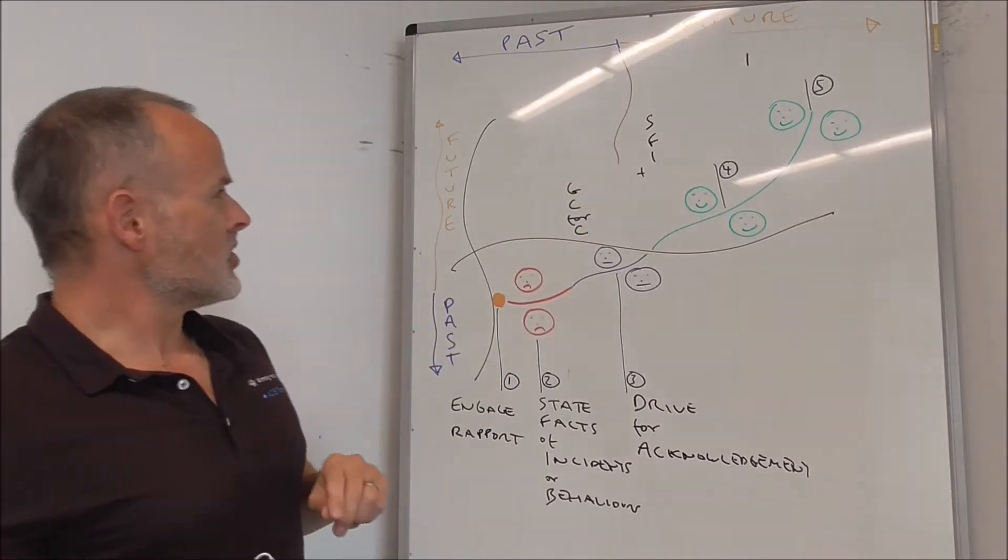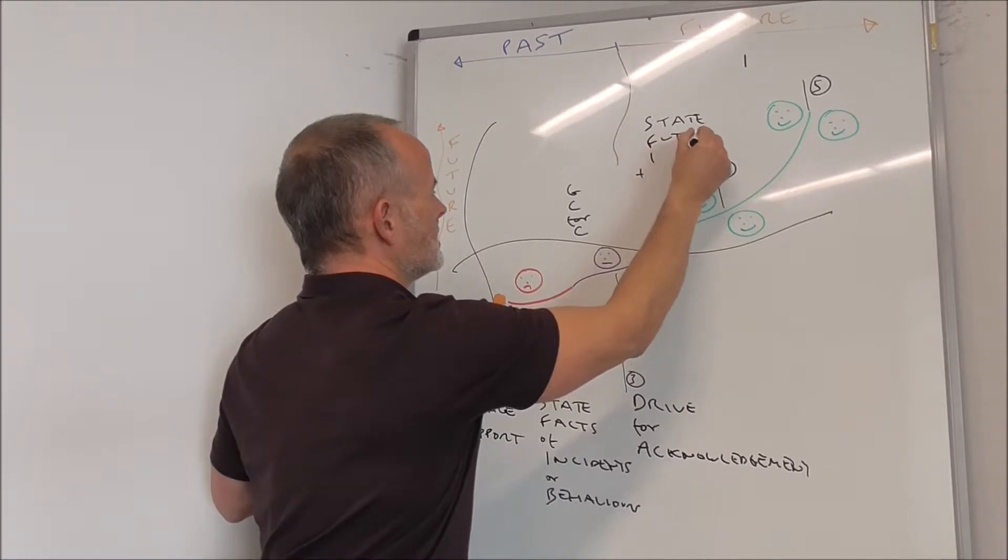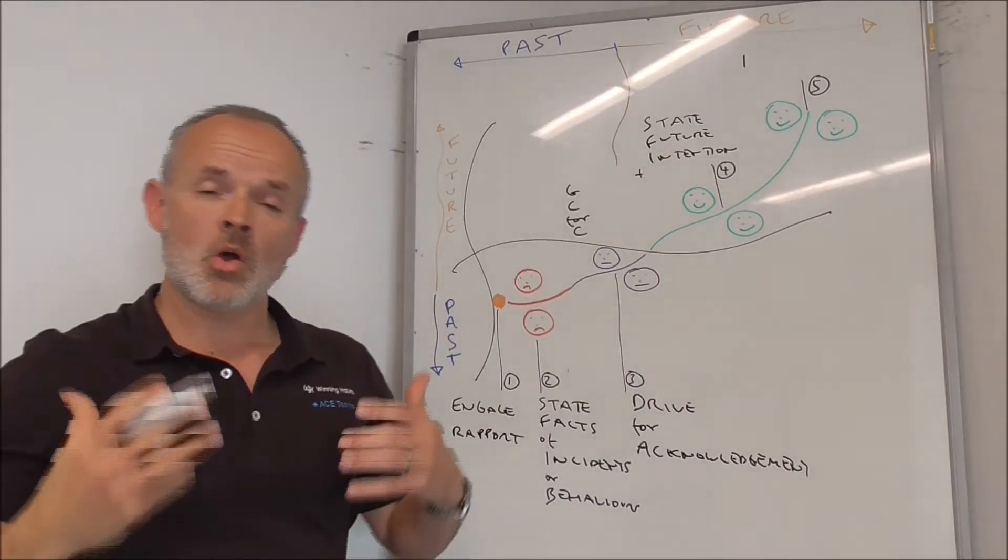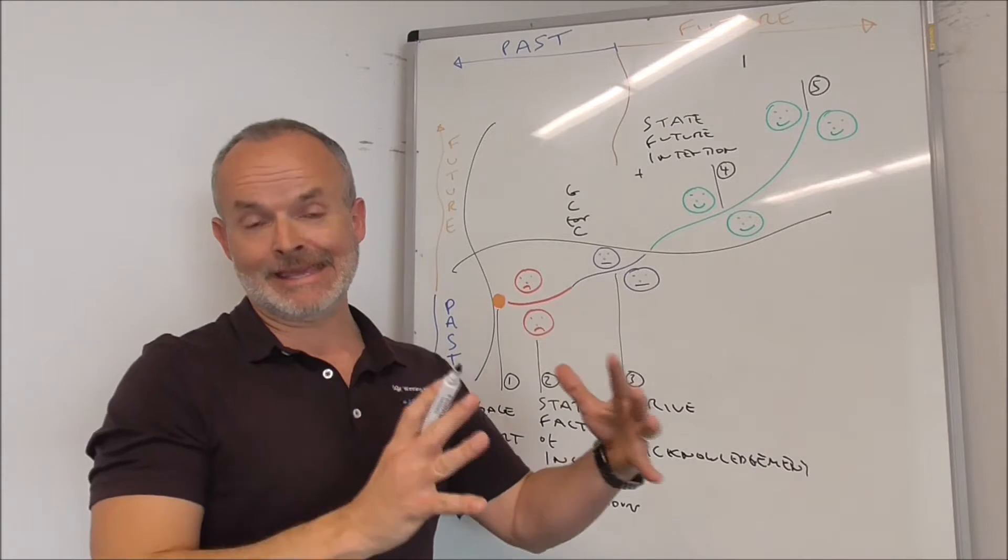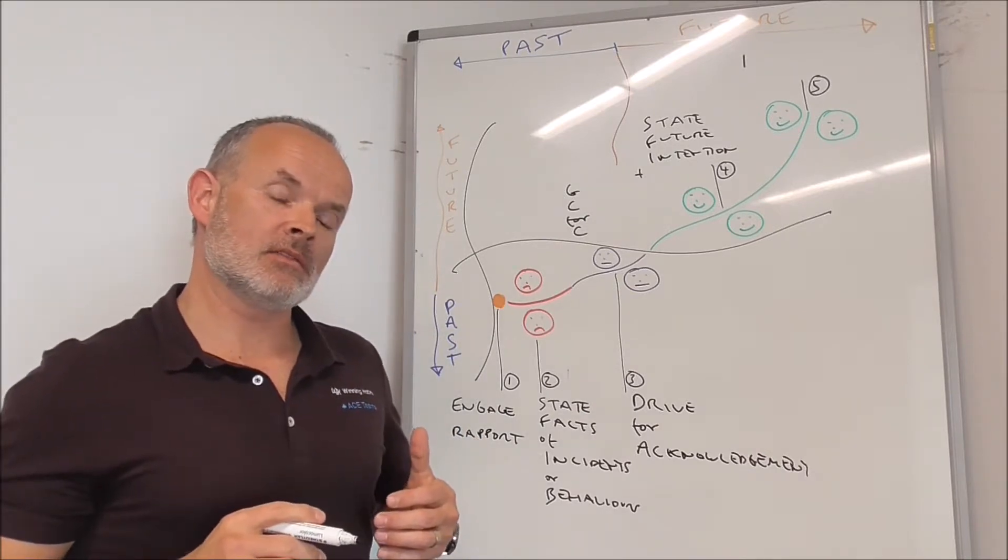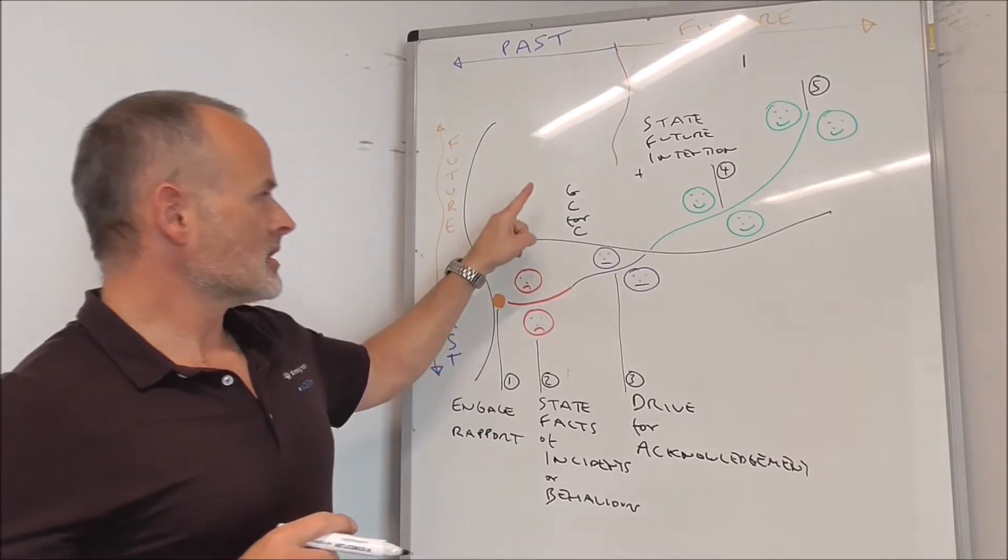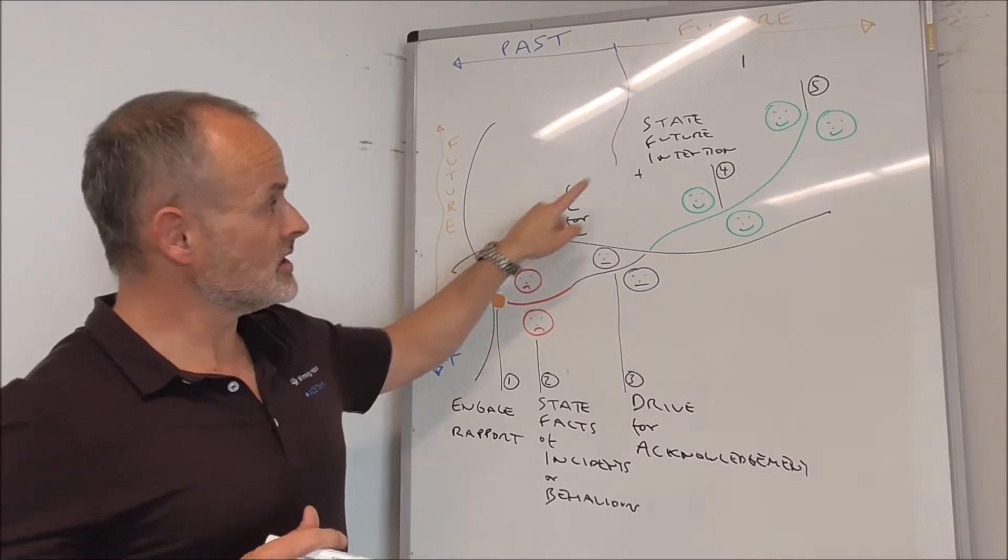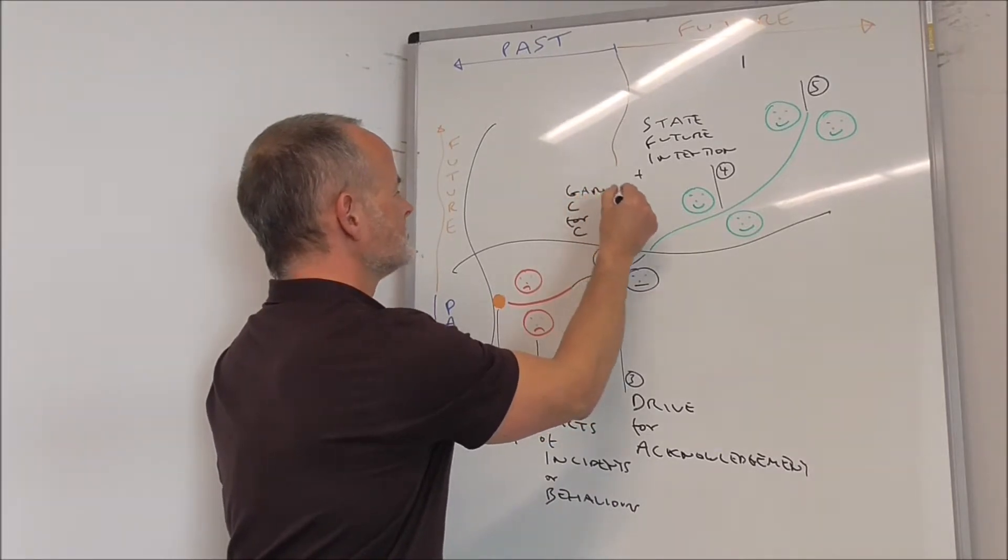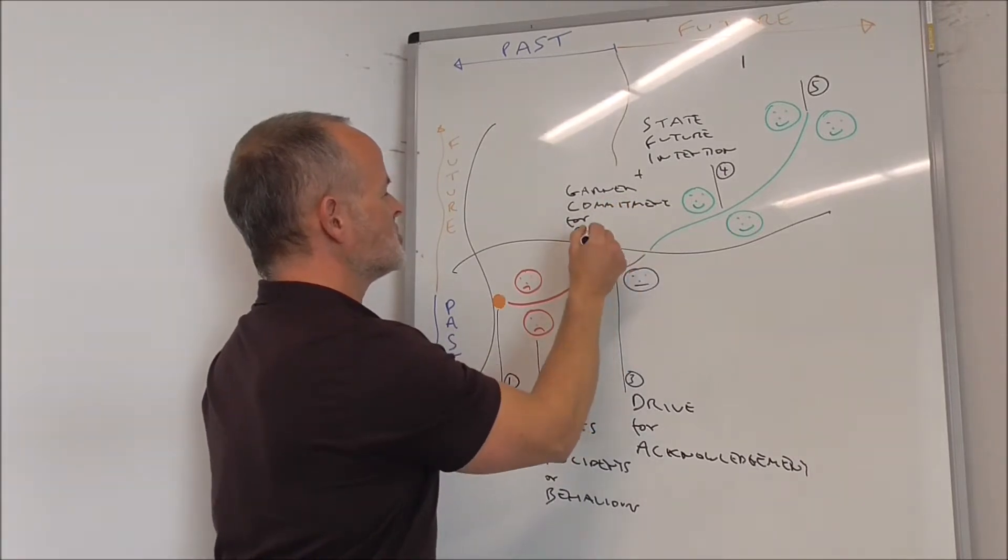So step four is State Future Intentions. So this is where we're saying, yeah, I get it. What I will do in the future is I will not shout at you in the future, I will not point my finger at you in the future. Now, don't forget, these are intentions of behavior change coupled with this point here.